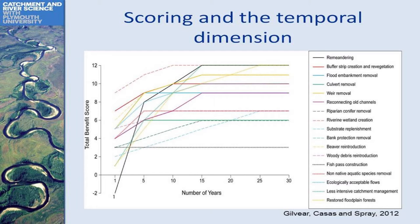One of our key findings was that it depends on the timescale. Something like floodplain forests gives a very high total score, but it is a very long-term proposition. So it depends whether you're looking at WFD directive timescales or longer-term sustainability.